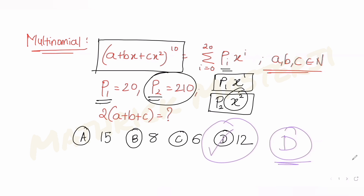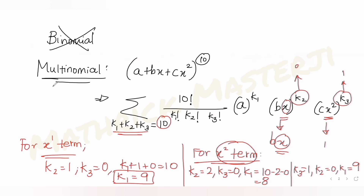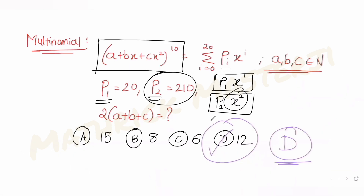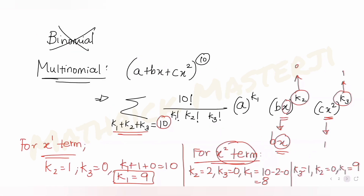To summarize: we used the multinomial theorem formula — the expansion of (a + bx + cx²) raised to 10 is given by the summation with k1 + k2 + k3 = 10, times 10! over (k1! · k2! · k3!), times each term raised to its respective k. We were given the coefficient of x¹ is 20 and the coefficient of x² is 210.